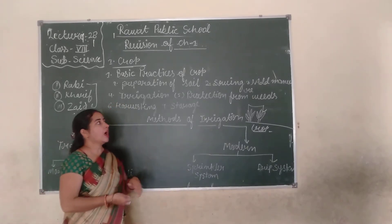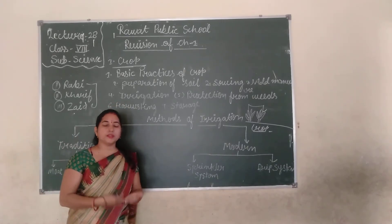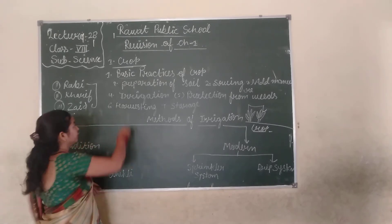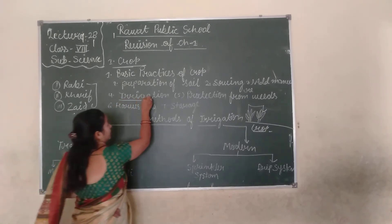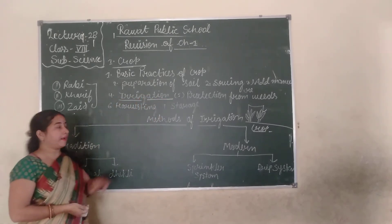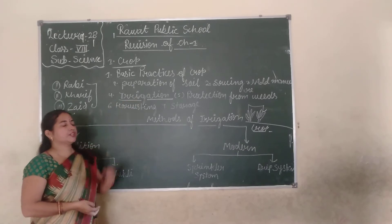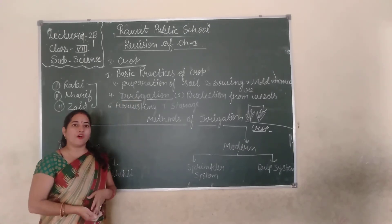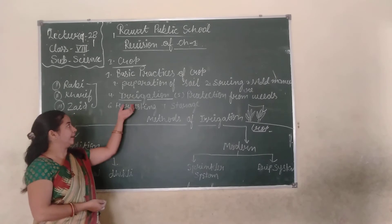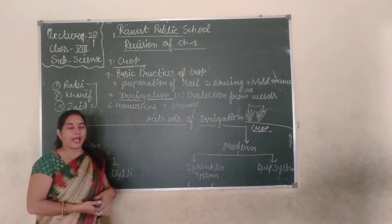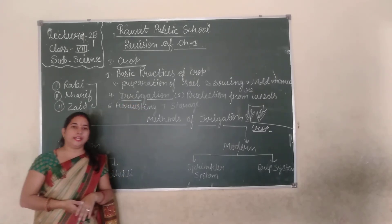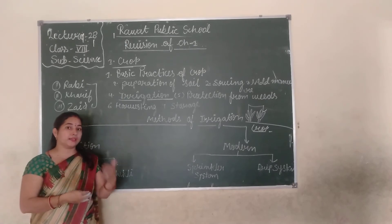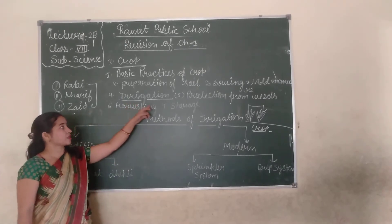Next comes irrigation. After sowing the seeds and providing manure and fertilizers, the process of irrigation comes. Irrigation means to supply water at fixed intervals of time to the crop — that is called irrigation.